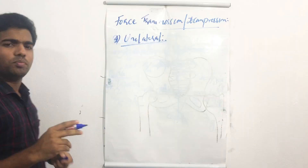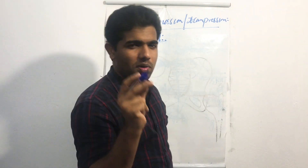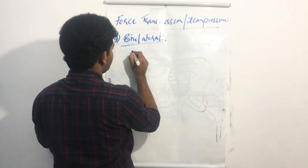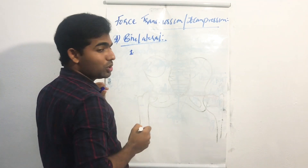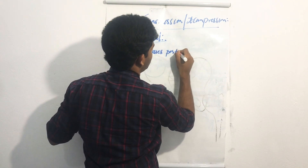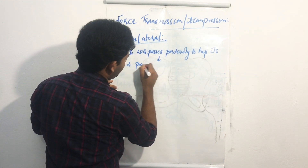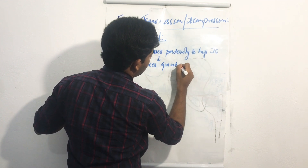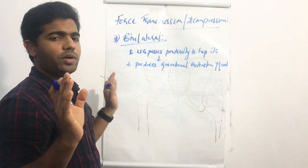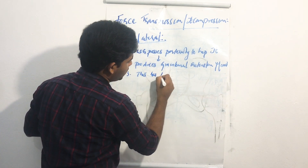Before moving to unilateral stance, since this is a new concept, let us summarize the bilateral stance analysis again. In bilateral stance, the line of gravity (LOG) passes posteriorly to the hip joint. This produces a gravitational extension moment. If the LOG passed anteriorly it would produce a flexion moment; since it passes posteriorly, it produces an extension moment.